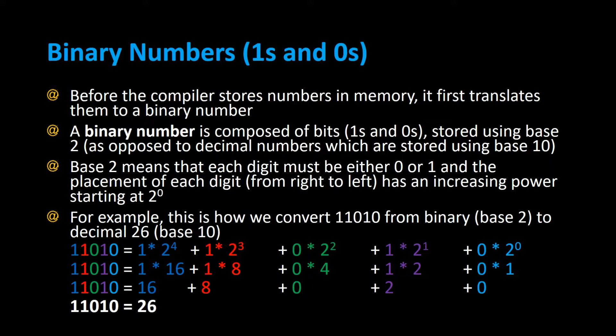Base 2 means that each digit must be either 0 or 1, and the placement of each digit from right to left has an increasing power, starting at 2 to the 0 power.